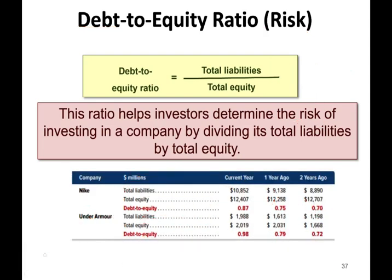Let's look at actual numbers. For example, we have Nike versus Under Armour. The current debt to equity ratio for Nike is 0.87 versus Under Armour at 0.98 — almost for every dollar in equity, they have a dollar in liabilities. From this limited information, Under Armour is slightly riskier, though not dramatically different from Nike. The key point is that different industries will have different typical ratios — for example, airline companies might have a high debt to equity ratio. You have to look at the whole picture; these ratios differ within each industry.